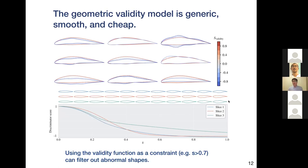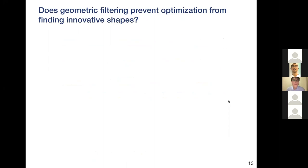A straightforward idea is to use this validity model as a constraint in the optimization to filter out all abnormal shapes. But before doing that, we have to answer a key question: does this filtering prevent the optimizer from finding innovative shapes? Since the model is trained on historical data, it may not recognize what innovative shapes we need now. If we mistakenly treat innovative shapes as abnormal, that would be terrible — we'd never find them.